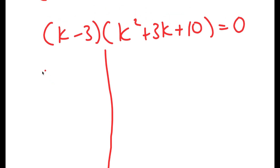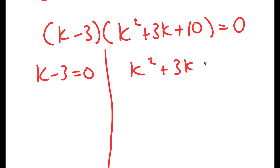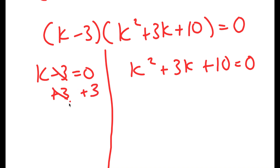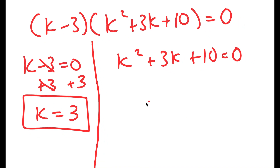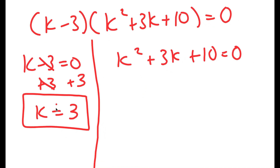This allows me to split this into two different equations: k minus 3 equals 0, and k squared plus 3k plus 10 is equal to 0. For k minus 3 equals 0, I can add 3 on both sides, so I get k is equal to 3. This is one solution of k.